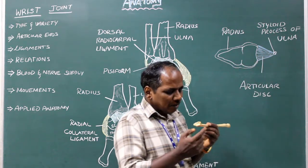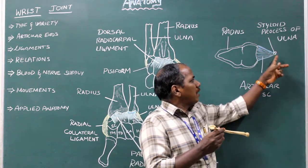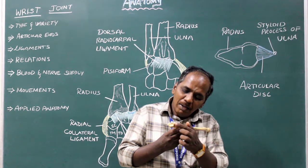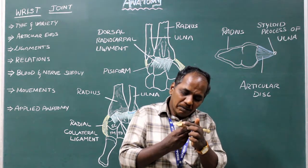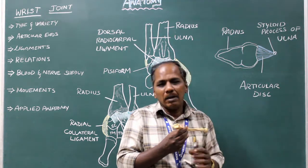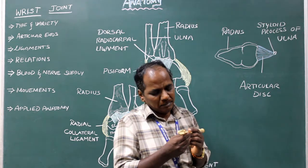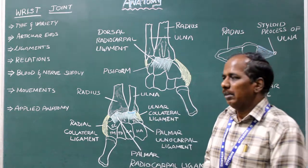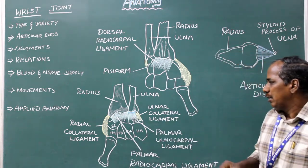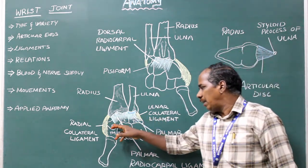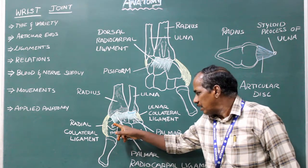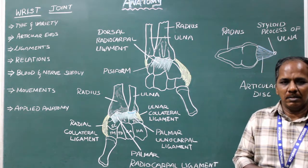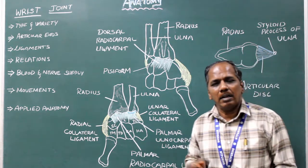Articular disc: the articular disc is attached to the styloid process of ulna and to the medial margin of the lower end of the radius. Distally: the superior articular surface of scaphoid, lunate, and triquetral bones. So these are the articular ends.